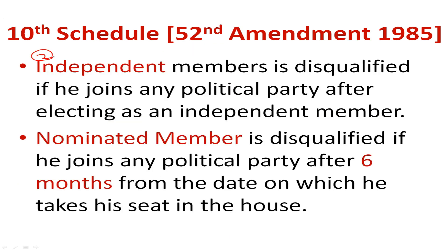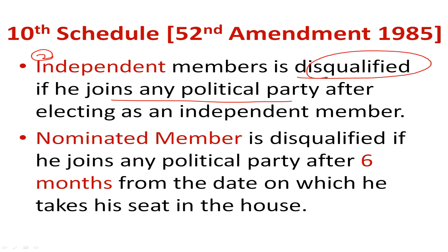The second case is independent members. An independent member contests elections without a party affiliation, votes independently, and grabs their seat representing themselves independently. But if, after winning the seat, they join a political party, that means they are now representing that party. That is why they get disqualified — if an independent member joins any political party after winning, they will be disqualified.